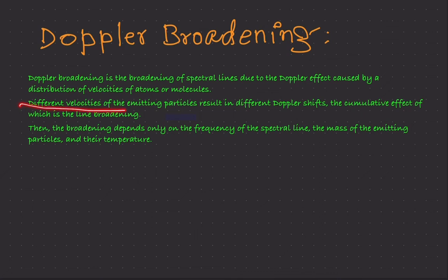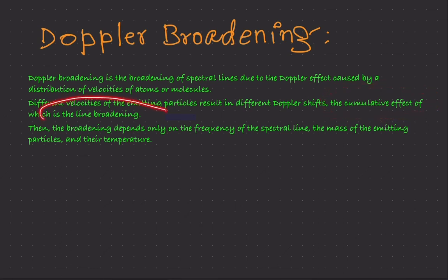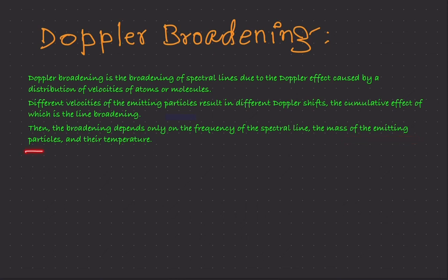Different velocities of the emitting particles result in different Doppler shifts. We will take the cumulative effect of all of these, which produces the line broadening. This broadening depends only on the frequency of the spectral line, the mass of the emitting particles, and their temperature.